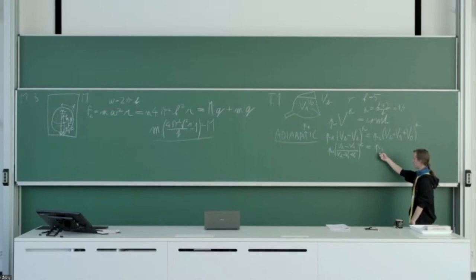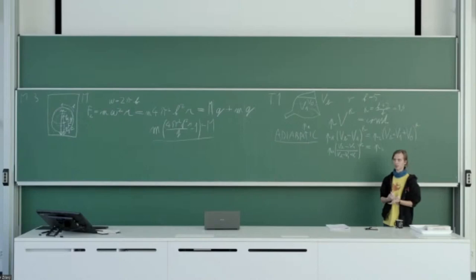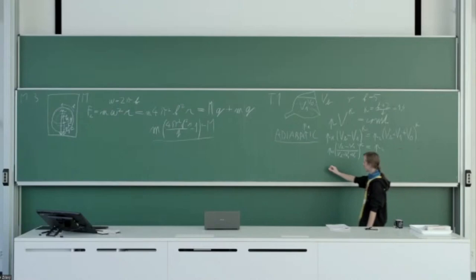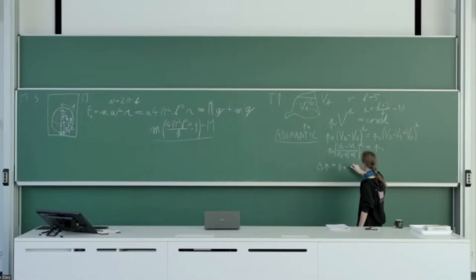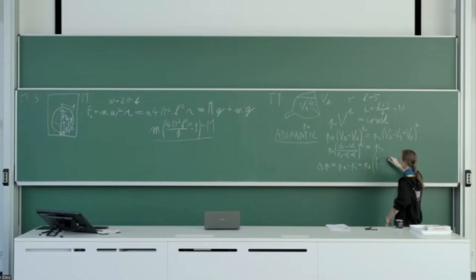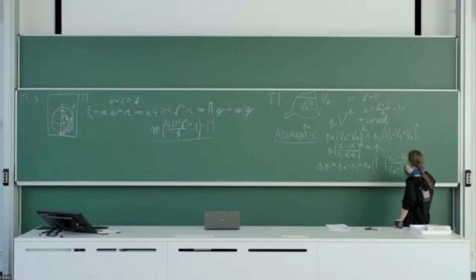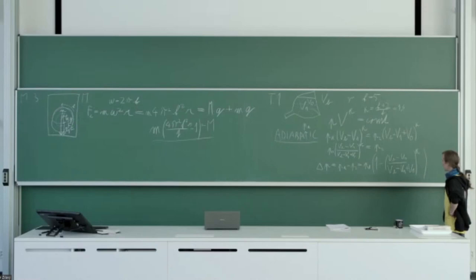The question asks not for the new pressure but for the decrease in pressure. So the answer is: atmospheric pressure minus the new pressure, which equals atmospheric pressure times [1 − ((V_bottle − V_w1) / (V_bottle − V_w1 + V_00))^κ]. This is the final answer.